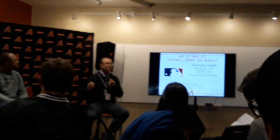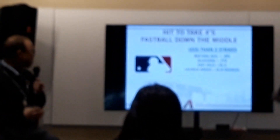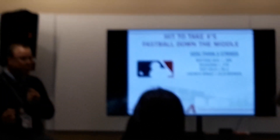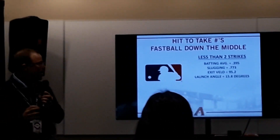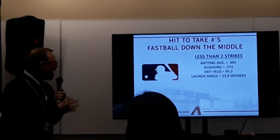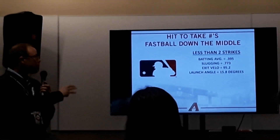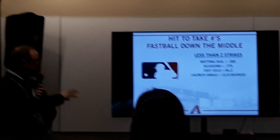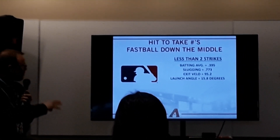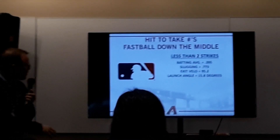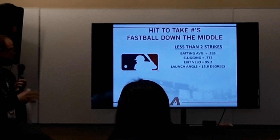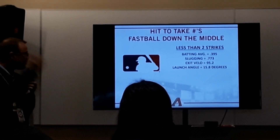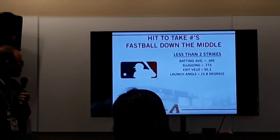Take numbers. A fastball down the middle at the major league level. Fastball's down the middle — batting average with less than two strikes: .395, slugging is .773, exit velocity 95, launch angle 15.8 degrees.